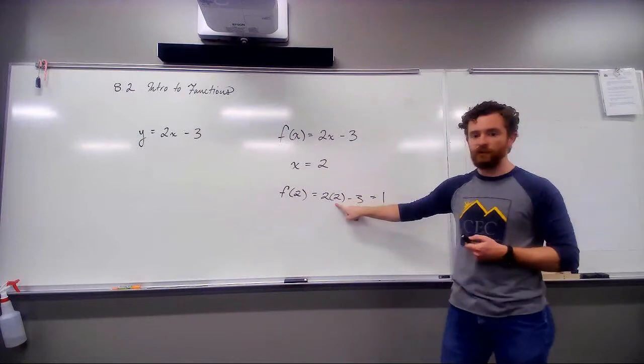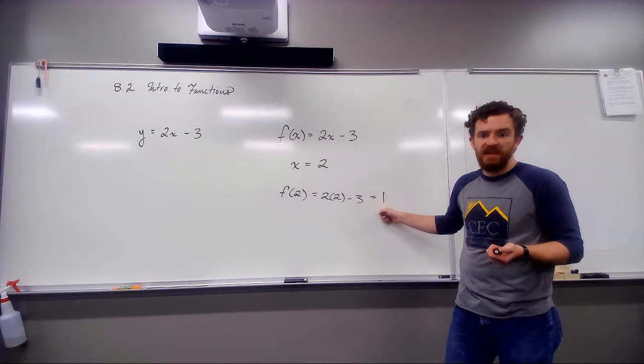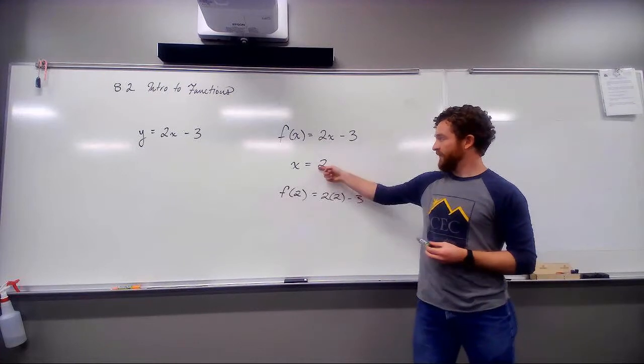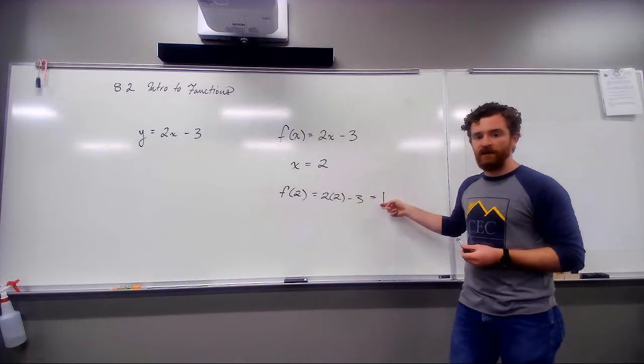So, I'm just swapping this x out for 2. I'm going to take every x I see, swap it out to a 2. See what I get. So, this is one of our ordered pairs. x of 2, y of 1.